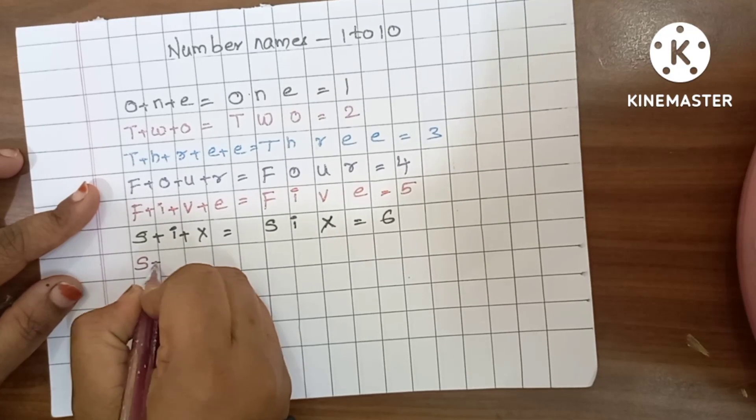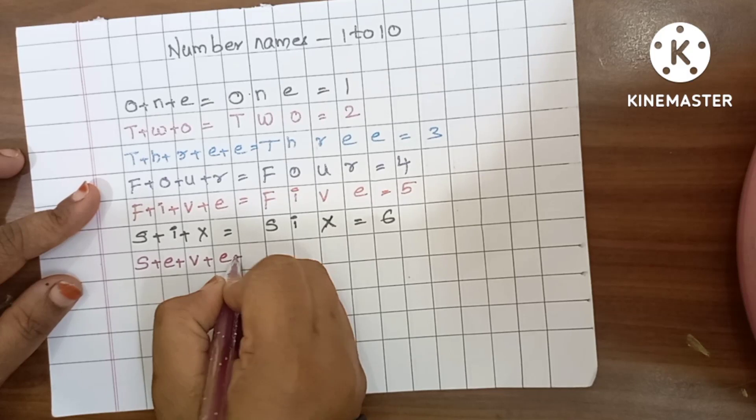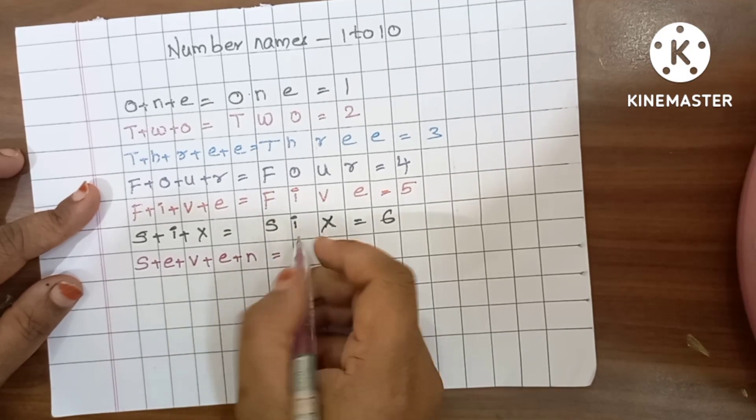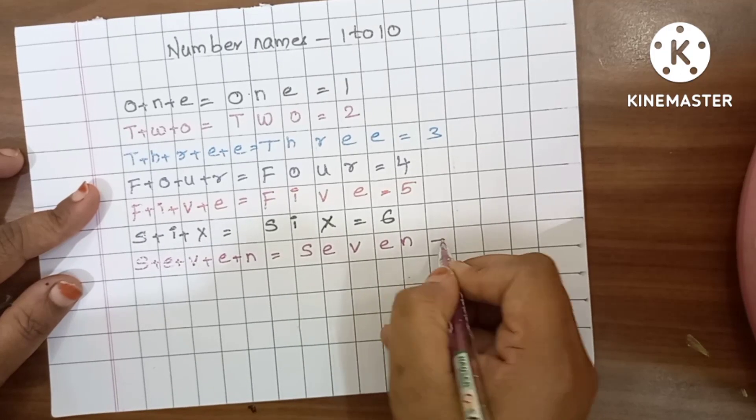7. S plus E plus V plus E plus N is equals to 7. S, E, V, E, N, 7.